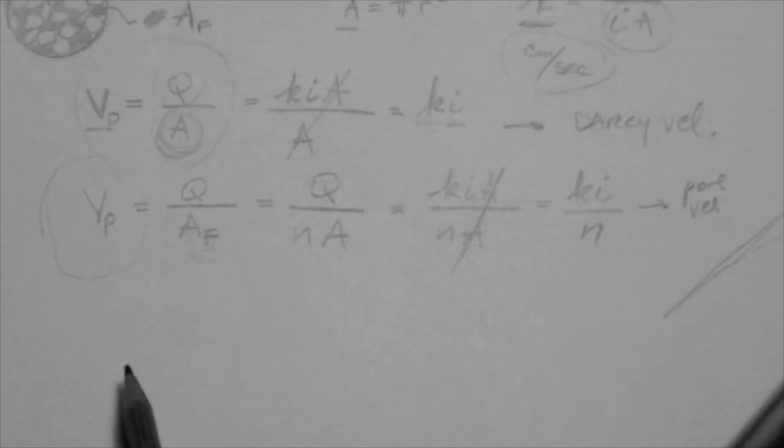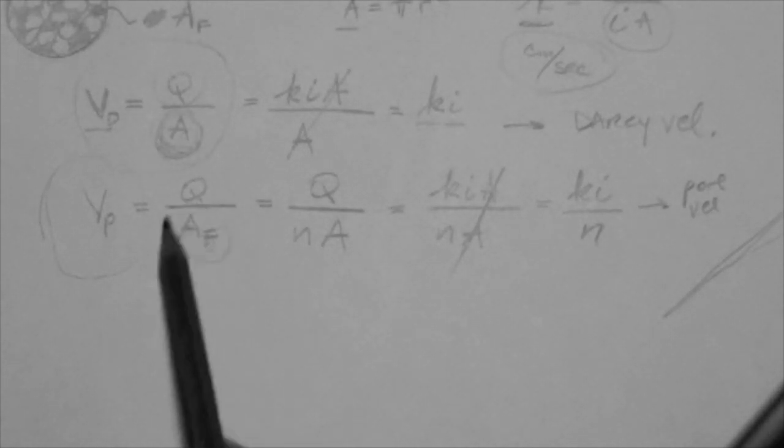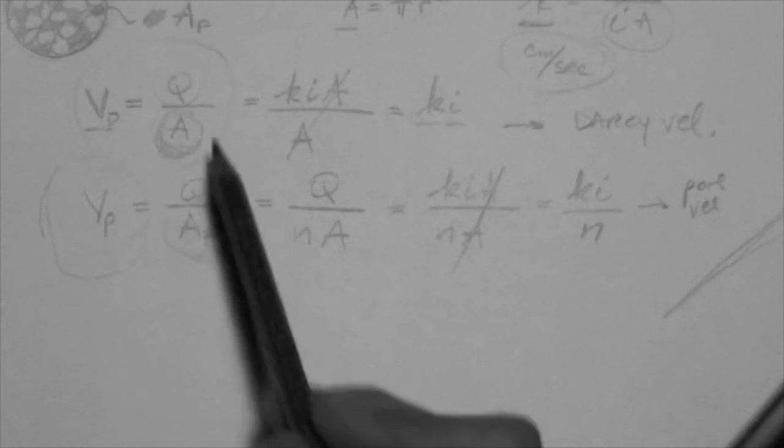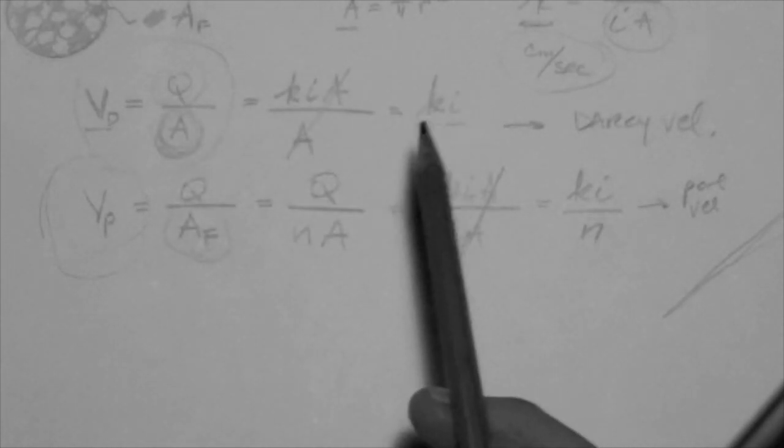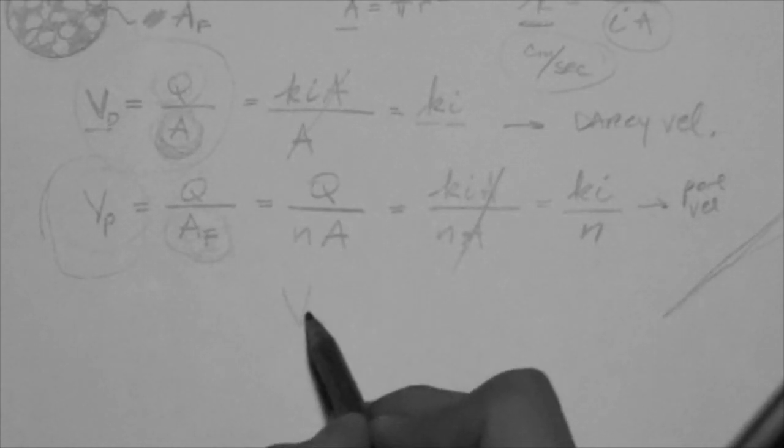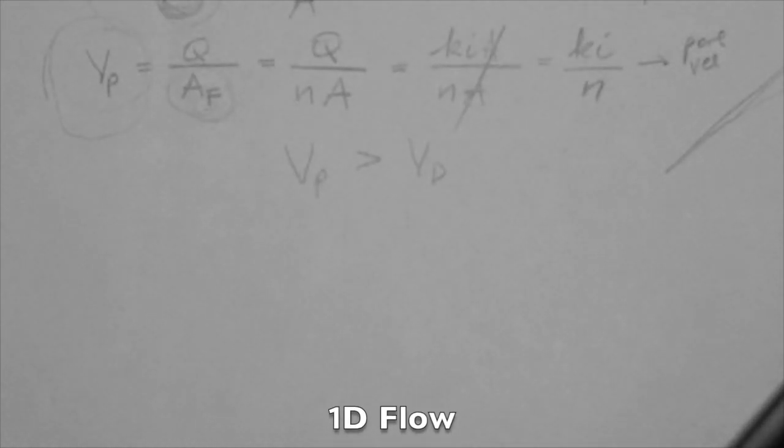Which one is larger? Well, the area available for flow is smaller than the area total. If you divide Q by a small number, you'll get a larger number than if you divide Q by a large number. So Vp is always larger than Vd.